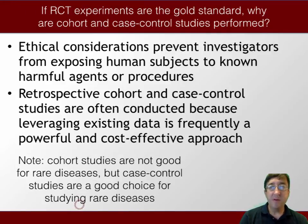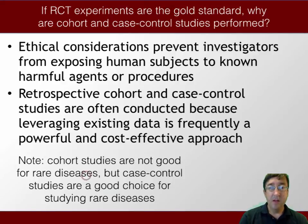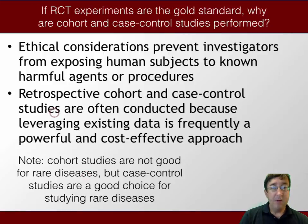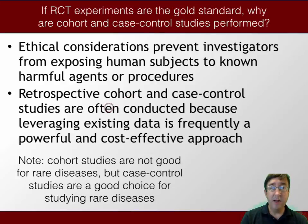If randomized controlled trial experiments are the gold standard, why are cohort and case control studies performed? Ethical considerations prevent investigators from exposing human subjects to known harmful agents or procedures. We can't always do randomized controlled trials because that would imply exposing patients to something we know may be harmful. Retrospective cohort and case control studies are often conducted because leveraging existing data is frequently powerful and a cost-effective approach — they are more accessible, easier to get started, and we can use existing data in many cases.